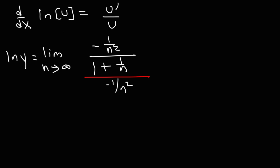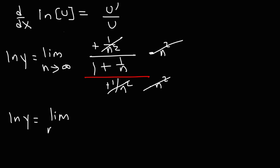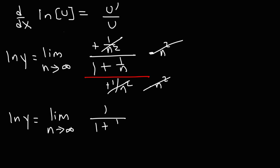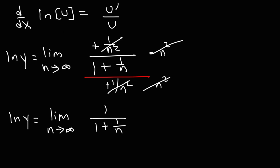We cancel the two negative signs — a negative divided by a negative gives a positive. Then we multiply the numerator and denominator each by n squared. So 1 over n squared times n squared is just 1, and similarly the bottom becomes 1. In the end, we get ln y equals the limit as n goes to infinity of 1 divided by 1 plus 1 over n, all divided by 1 — which we don't need to write.